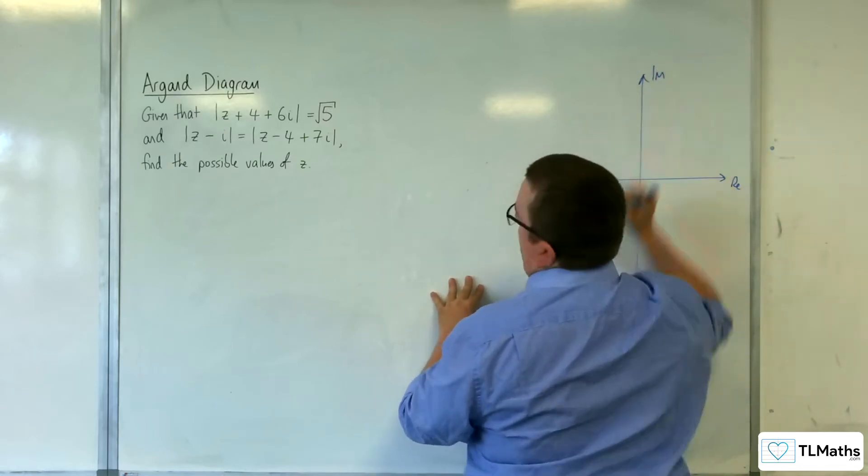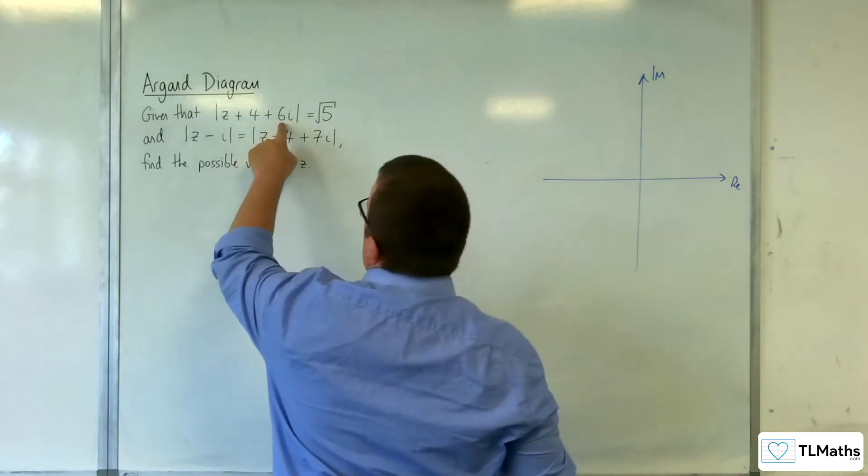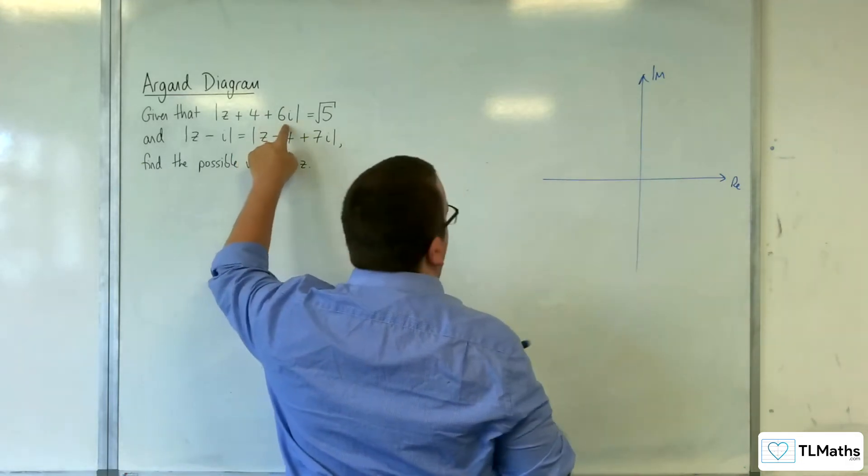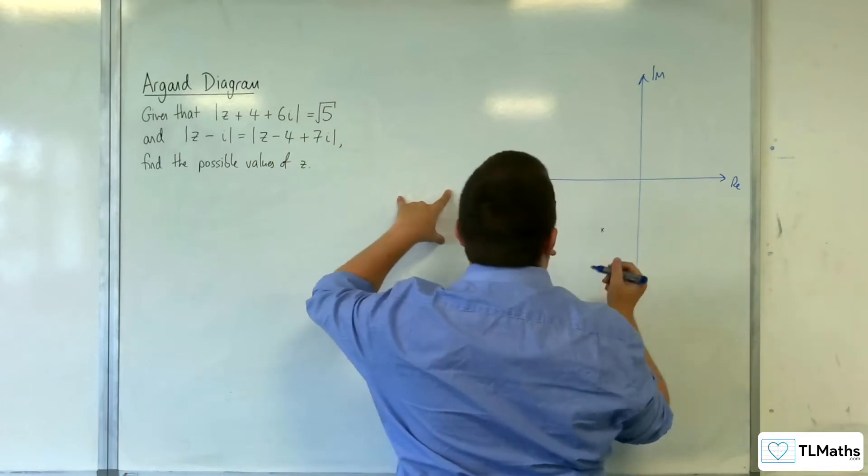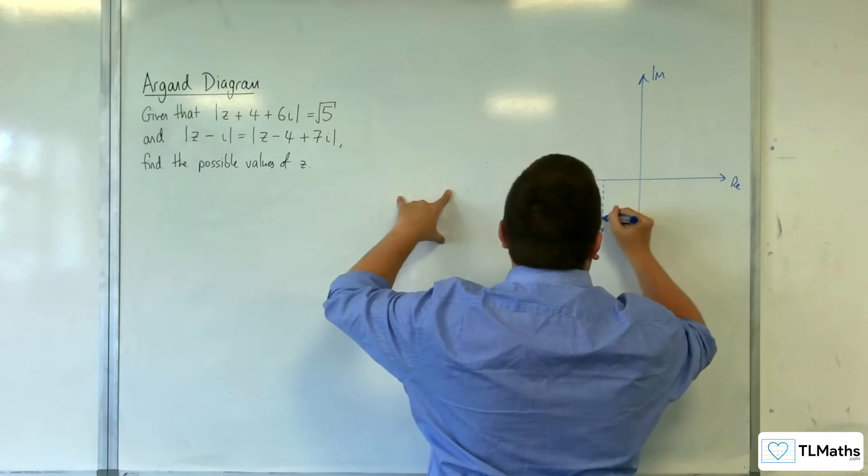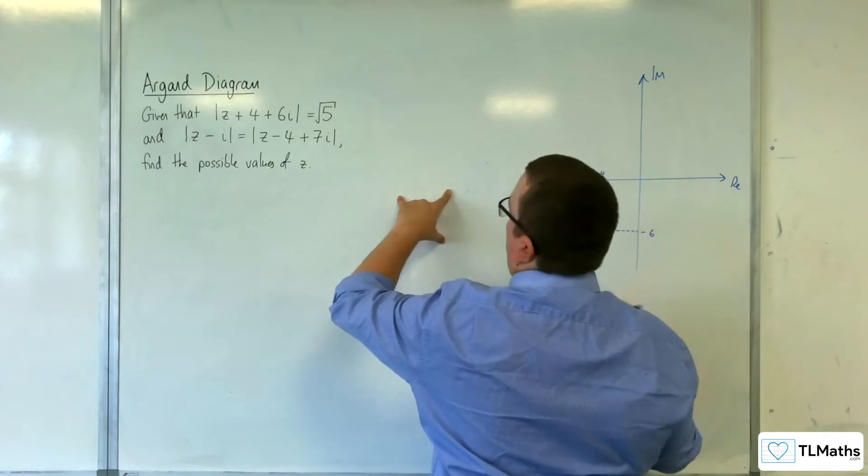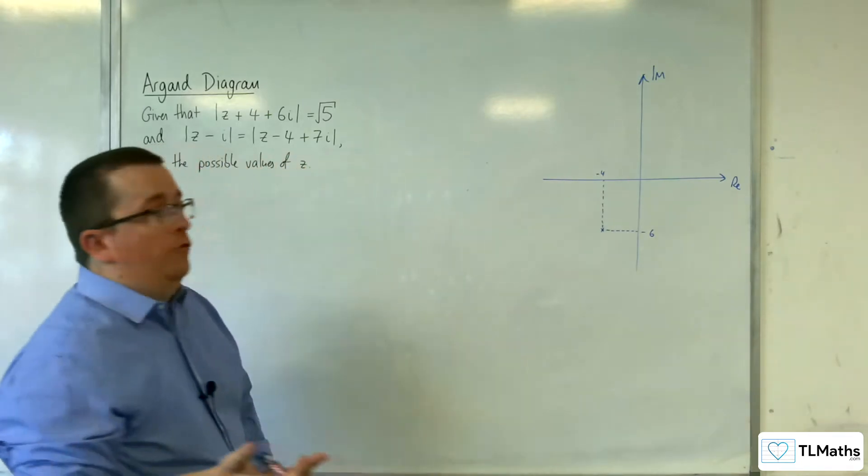So real axis, imaginary axis. So this is a circle centred at minus 4 minus 6. So minus 4 minus 6, so somewhere down here. Minus 4 minus 6, and it's got a radius of root 5.